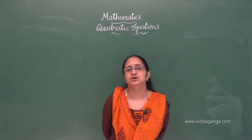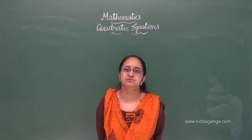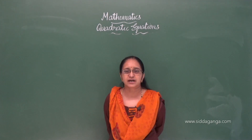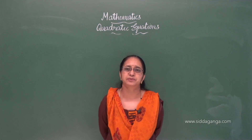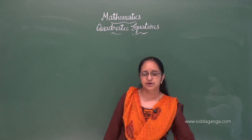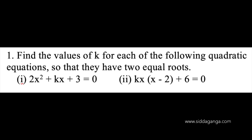What is the condition for equal roots? If the quadratic equation has equal roots, then the discriminant b² minus 4ac should be equal to 0. Let us try to solve this problem. First one: 2x² + kx + 3 = 0.